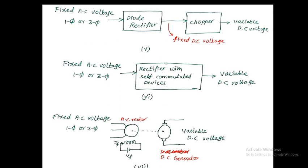The seventh one: from fixed AC voltage, connect it to an AC motor whose shaft is coupled to a DC generator. The AC motor takes supply from the fixed AC voltage, converts electrical to mechanical energy, and that mechanical energy drives the DC generator to produce variable DC voltage.